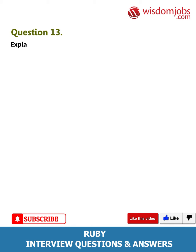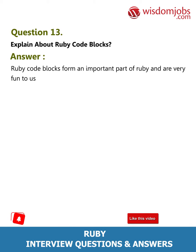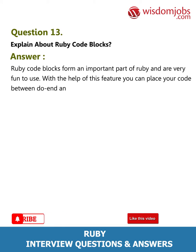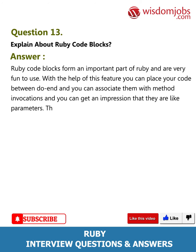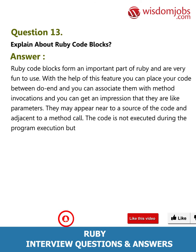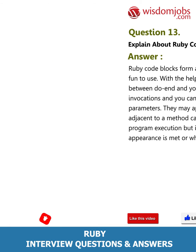Question 13: Explain about Ruby code blocks. Answer: Ruby code blocks form an important part of Ruby and are very fun to use. With this feature, you can place your code between 'do' and 'end', and you can associate them with method invocations, giving an impression that they are like parameters. They may appear adjacent to a method call. The code is not executed during program execution but is executed when the context of its appearance is met or when it enters a method.